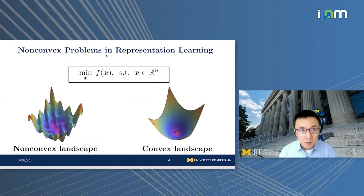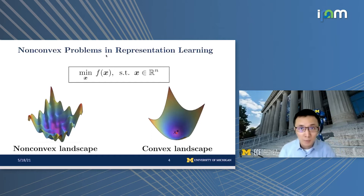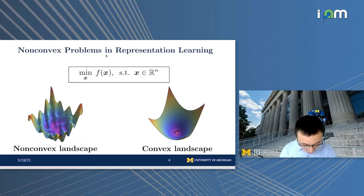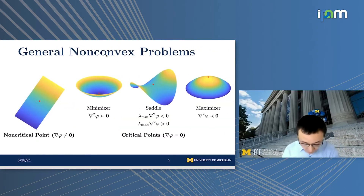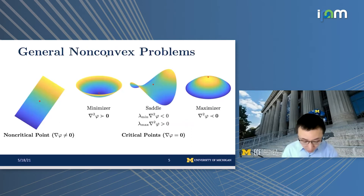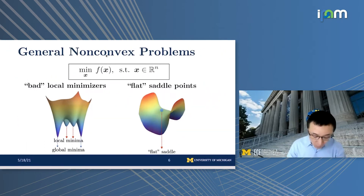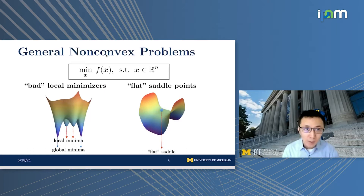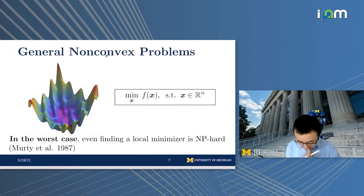We're dealing with representation learning problems that are usually non-convex, in contrast to convex problems where local minimizers are global and easy to optimize. For non-convex problems, it's much more difficult — you could encounter minimizers which are not global, saddle points which are neither local minimizers nor local maximizers. In the worst case, you could encounter bad local minimizers and flat saddle points where finding a descent direction could be very difficult or computationally prohibitive.